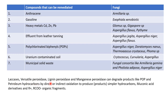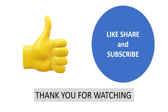To recap: laccases, versatile peroxidase, lignin peroxidase, and manganese peroxidase can degrade products like POPs and petroleum hydrocarbons by direct or indirect oxidation, producing simpler hydrocarbons, muconic acid derivatives, and other organic fragments. This was all about using fungi in bioremediation — a general theoretical and conceptual overview of the topic.